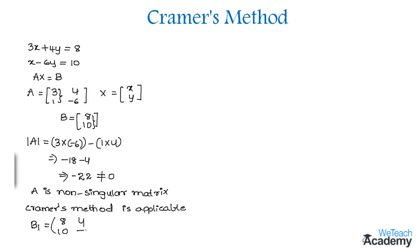So the matrix b1 will be [8, 4; 10, -6]. Similarly, the next matrix b2 is obtained by replacing the second column of A with the elements 8 and 10 from b. So b2 will have first column [3; 1] and second column [8; 10].